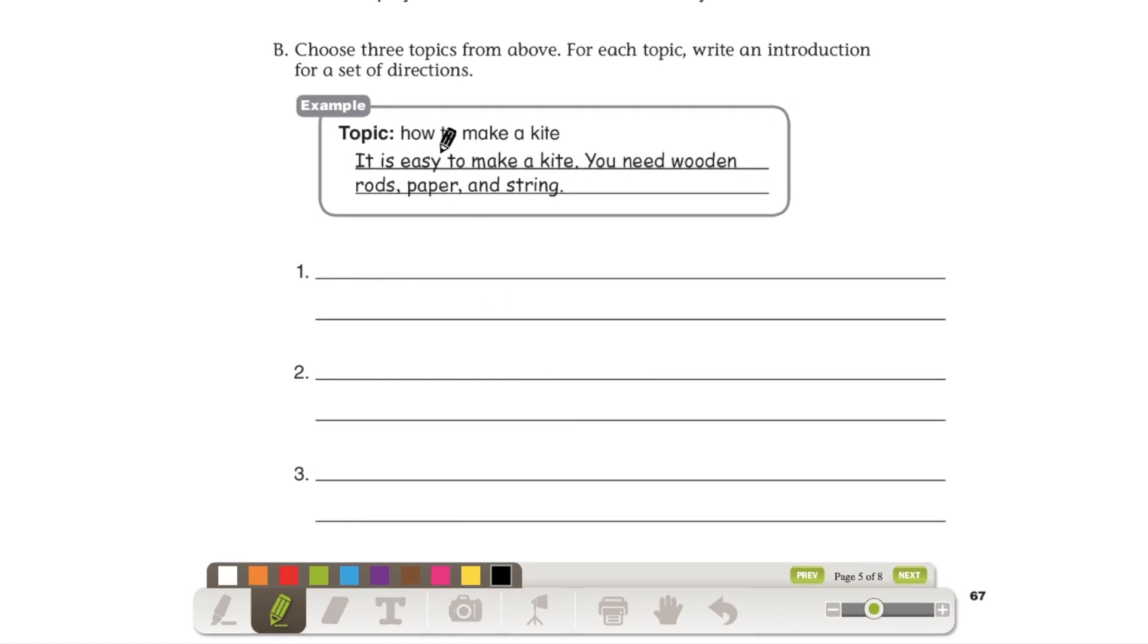So the example, they picked the kite. We need a topic sentence first before you go into materials and steps. So their topic sentence was, it is easy to make a kite. We can also say it in other ways, like, would you like to learn how to make a kite? Okay? So you can ask them a question or you can tell them about what we will be doing, which is making a kite. And then you write down your materials that you need using those commas right here.